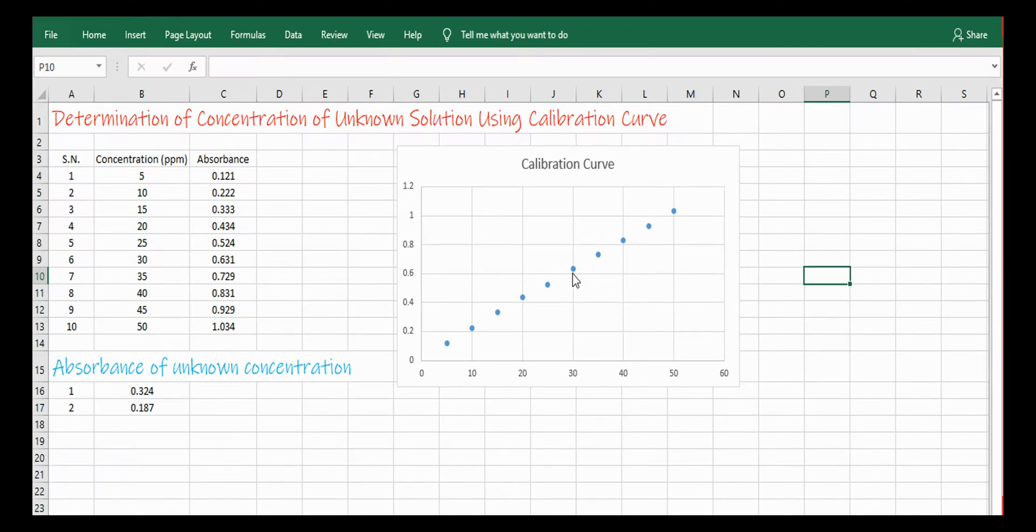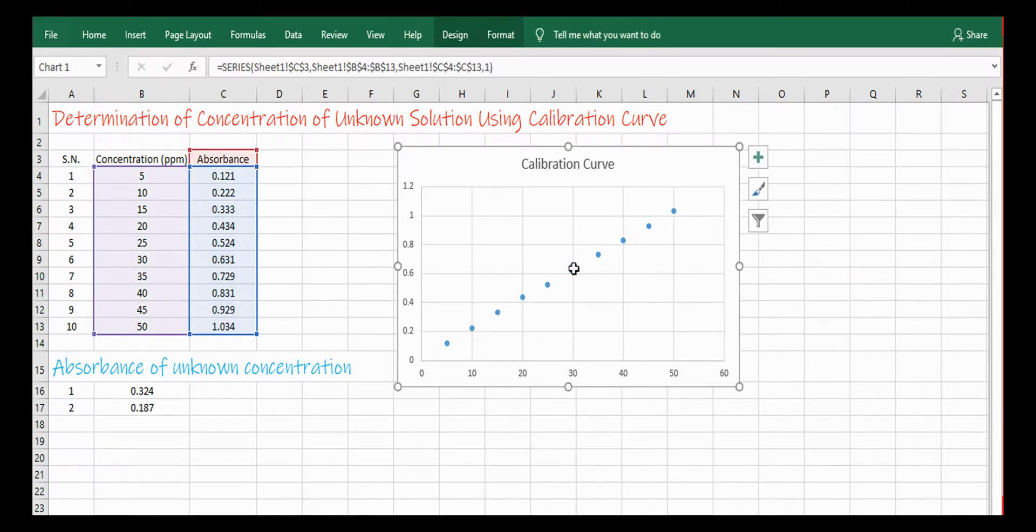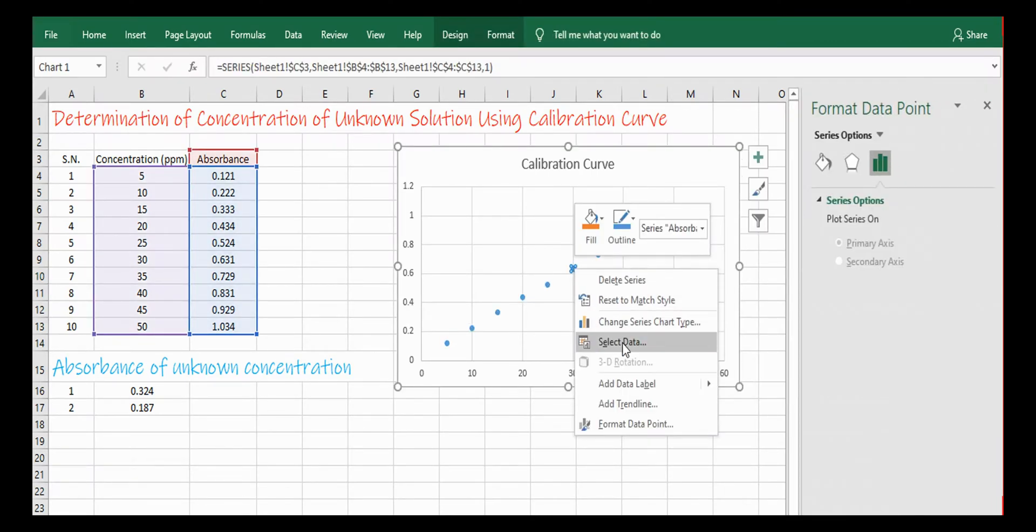Now you can click any point of the line. Then you will see like this and then right click. After right click you will see like this. And select Add Trendline.